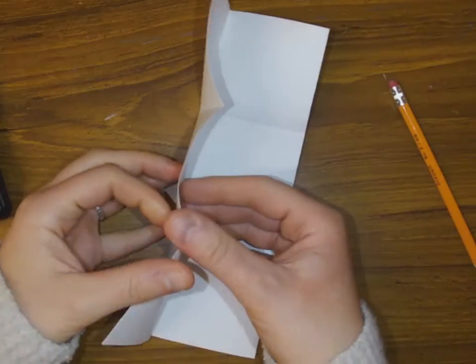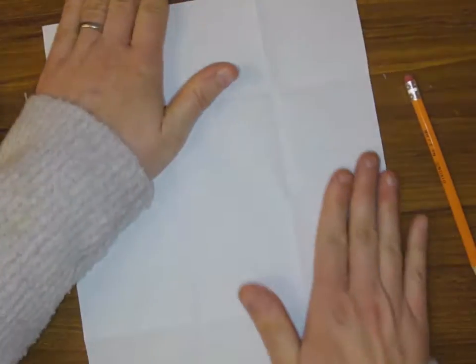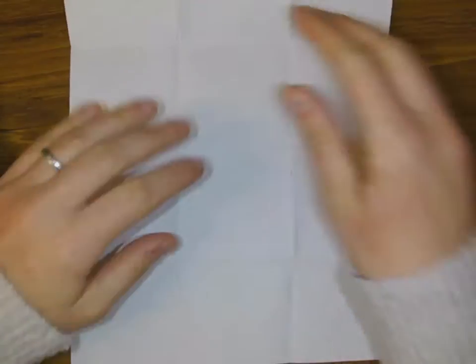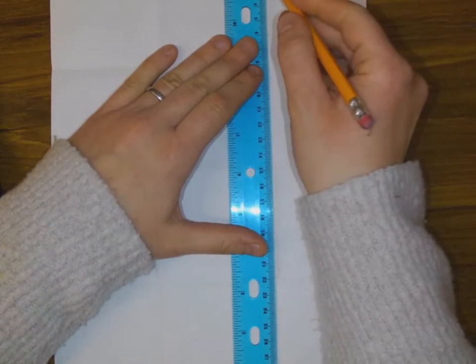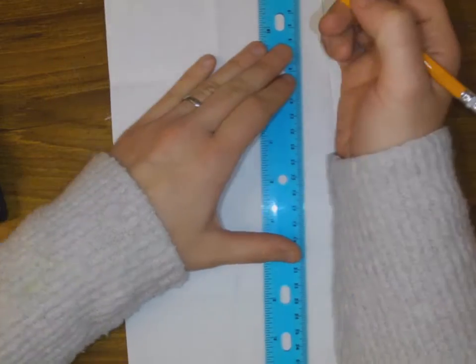Again, you could just do this using your ruler and measuring it out to get 12 equal sections, but I find that this is the really quick way of doing it. And then I'm just going to take my pencil and divide my sections.